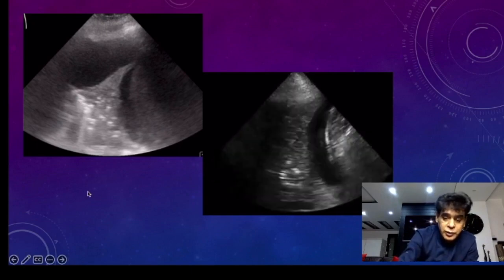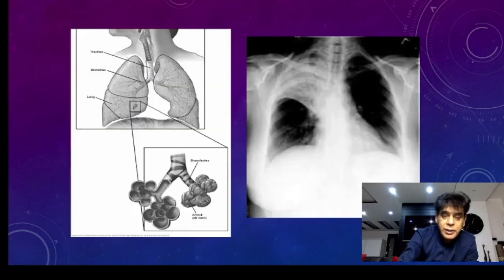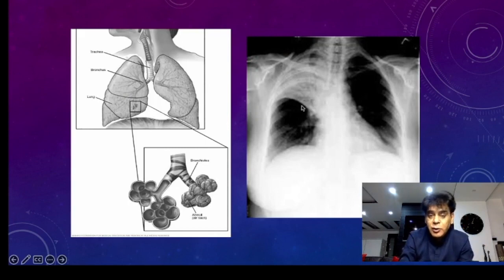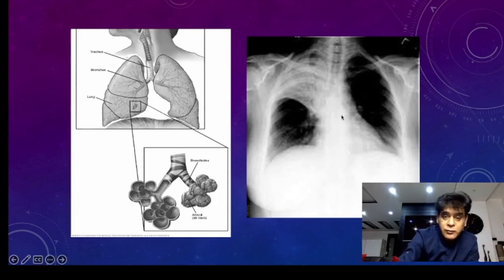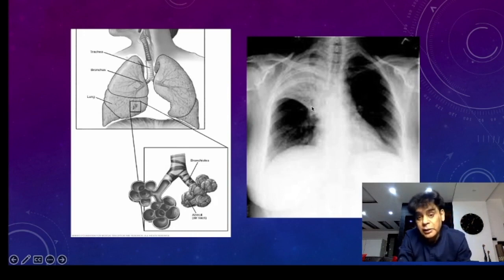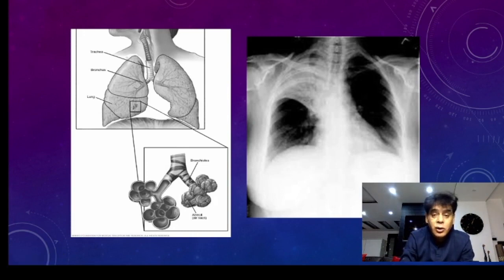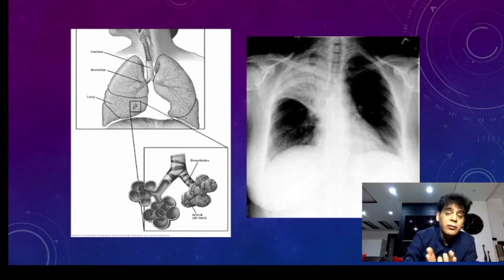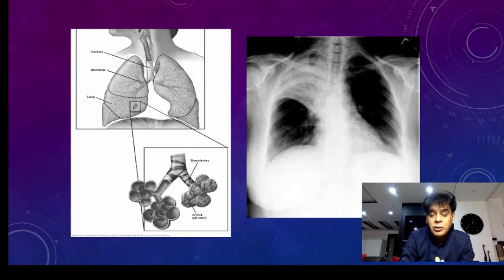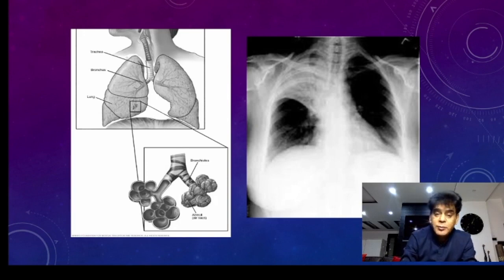Remember that bright areas on an X-ray can represent collapse, consolidation, or even pleural effusion. When pleural effusion is free, it will occupy the costophrenic angles. When loculated, it may be anywhere. But keep in mind that pleural effusion will not have a bronchogram, because pleural effusion is fluid collection within the pleura and there are no bronchi there. So there is never confusion in differentiating pleural effusion from collapse and consolidation.